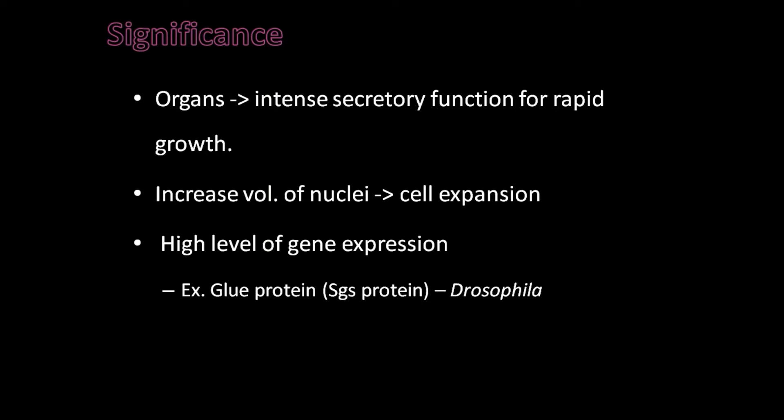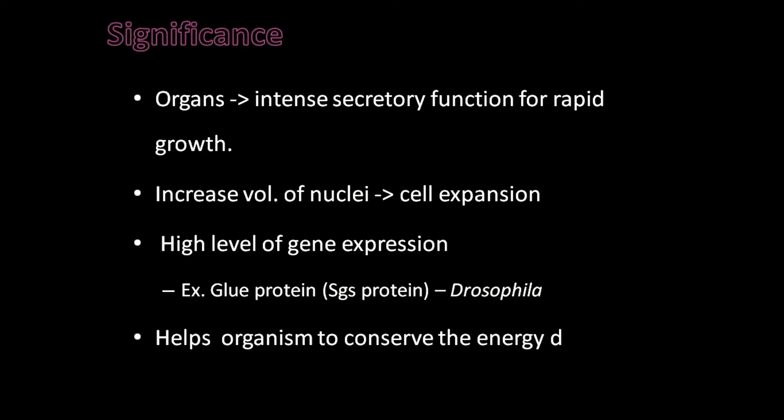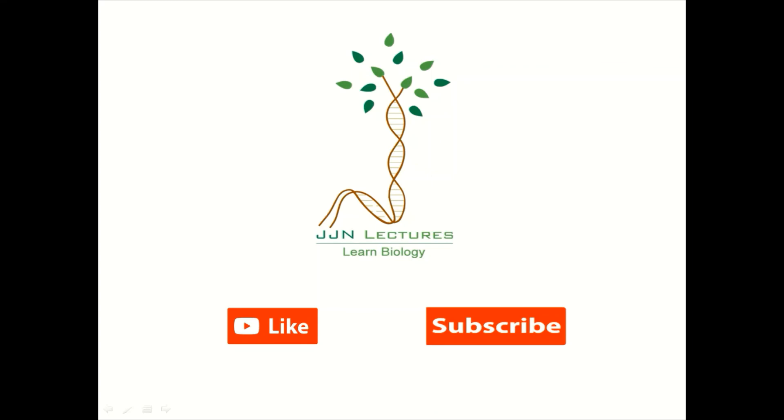Because of polytene chromosomes, the organism can increase cell volume and DNA replication without undergoing mitosis and cytokinesis, conserving energy during its development process. This is all about polytene chromosomes.